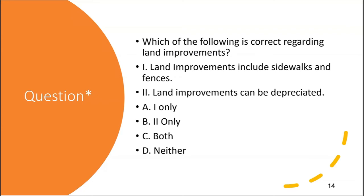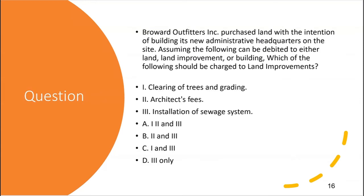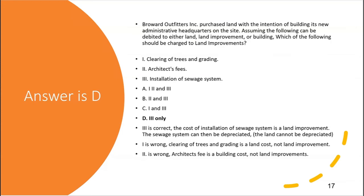Which of the following is correct regarding land improvements? One: land improvements include sidewalks and fences — yes. Two: land improvements can be depreciated — yes. So answer C is correct — both one and two. Now, Broward Outfitters Inc. purchased land with the intention of building its new administrative headquarters. Which of the following should be charged to land improvements? Number one: clearing of trees and grading — that's a land cost. Number two: architect's fees — that's building costs. Number three: installation of a sewage system — yes, if Broward Outfitters installs and owns their own sewage system, that would be land improvement. So the answer is D — three only.